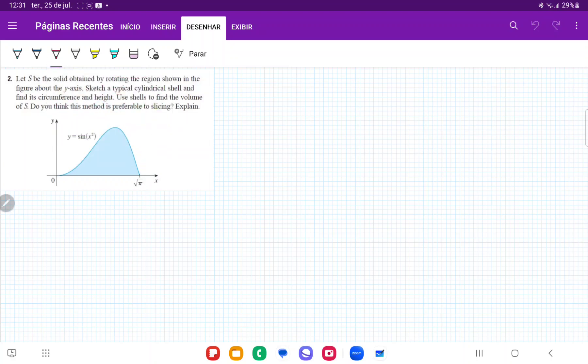So for the shell method, we're just going to take this height here, which is the height beneath the blue curve, and it's described by wherever it touches this function, sine of x squared, and then we're going to rotate it like so.